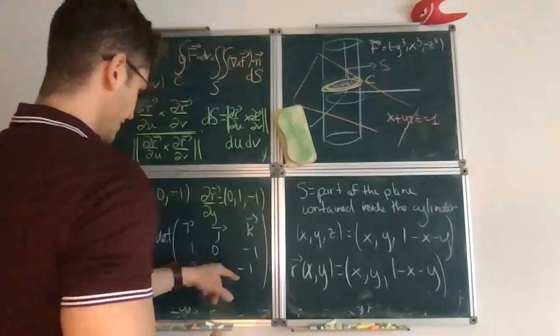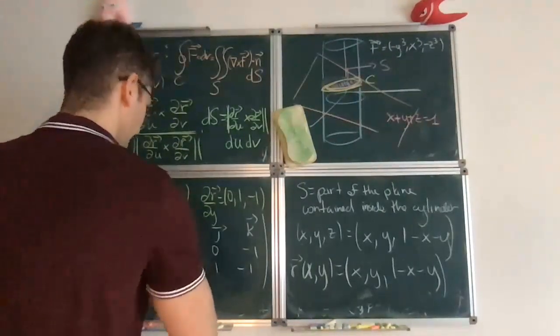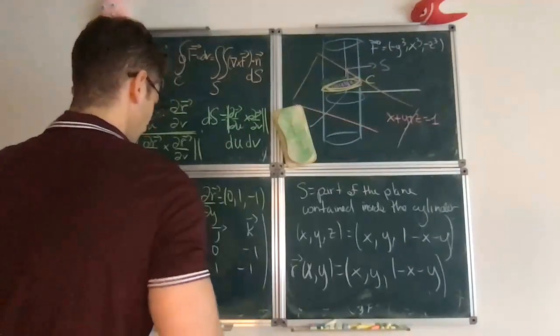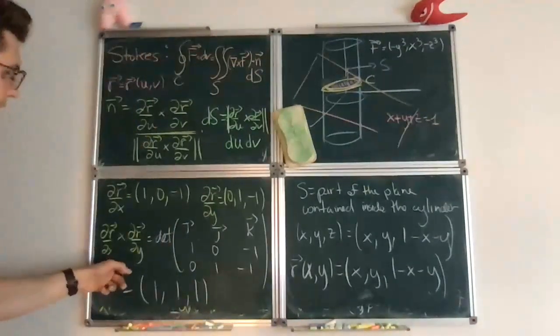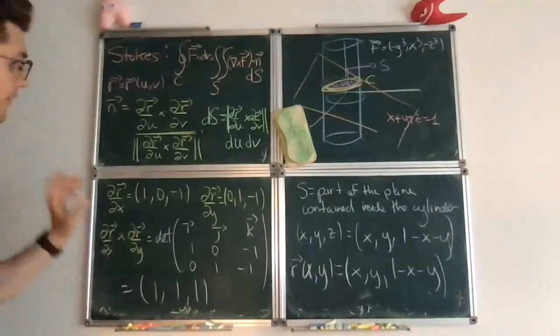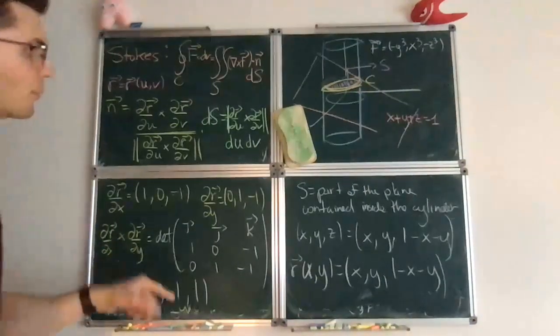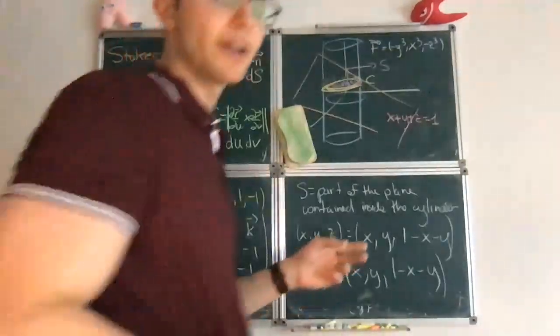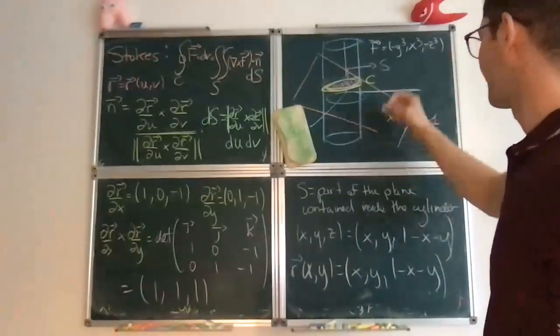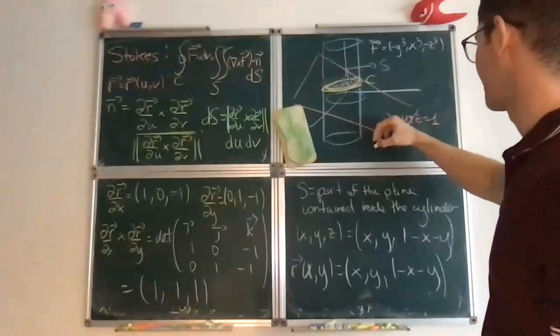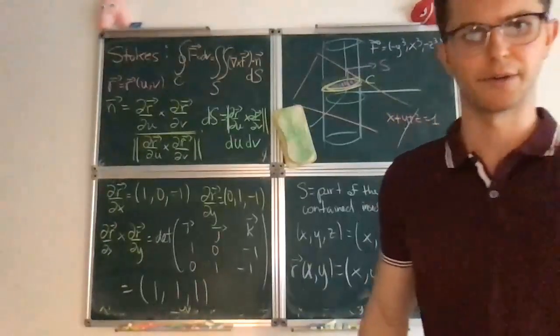And so their cross product is fairly straightforward. So this is 1, this is 1. So the normal vector field, the normal vector before normalizing it, is 1, 1, 1. I didn't want to spoil the surprise, but it has to be that because the coefficients of the plane are 1, 1, 1. And remember, the normal vector to the plane are just the coefficients that appear here.